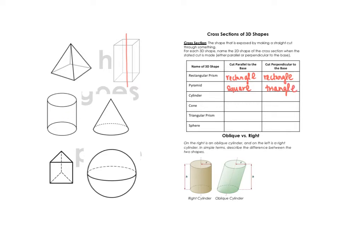With a cylinder, if we cut parallel to the base, the shape would be a circle. If we cut perpendicular, it would be a rectangle. With a cone, cutting parallel to the base also gives a circle, and cutting perpendicular through the point gives a triangle. For a triangular prism, parallel to the base gives a triangle, and perpendicular gives a rectangle.